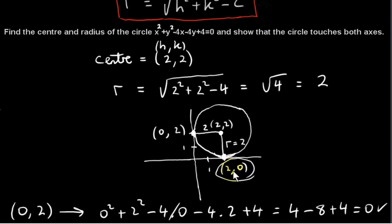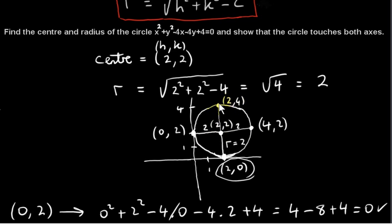Similarly, you can plug the point 2, 0 into the equation and it should also satisfy it. We can also get other points on this circle. The point on the right has coordinates 4, 2, because the radius is 2, so 2 plus 2 is 4 — the diameter of this circle is 4. The coordinates of the point at the top are 2, 4. So you can check: if you substitute any of these four points into the equation of the circle, you will see that they all satisfy it.